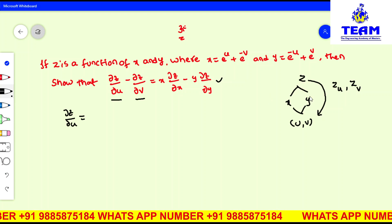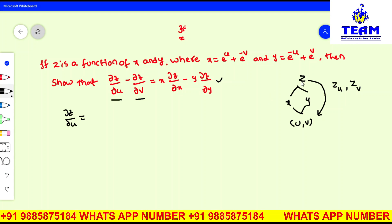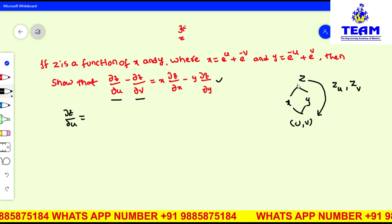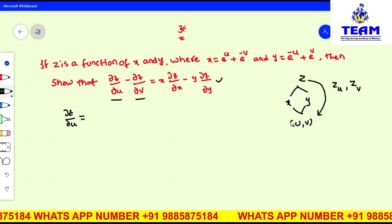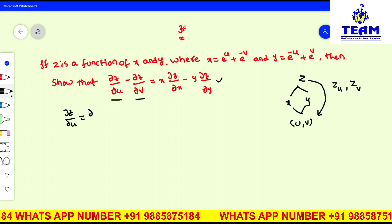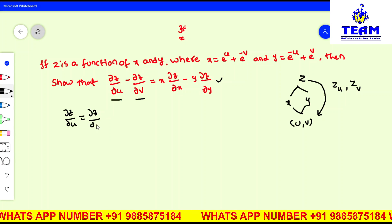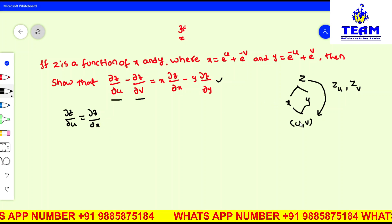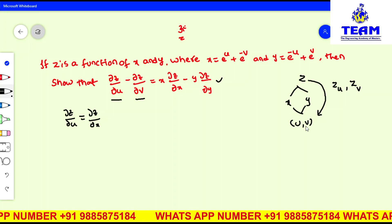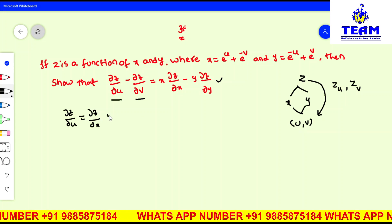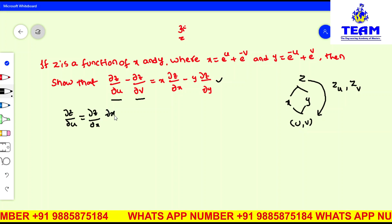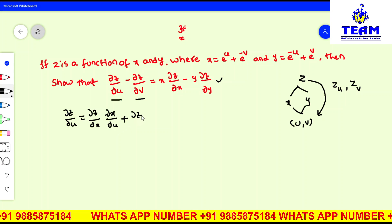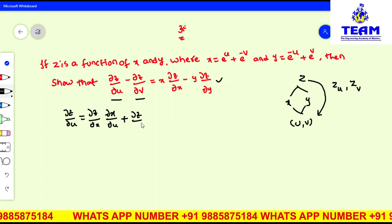Z is having two paths. First, z with respect to x and x with respect to u. Later, z with respect to y and y with respect to u. So: ∂z/∂u = ∂z/∂x times ∂x/∂u, because x also contains two independent variables, plus ∂z/∂y times ∂y/∂u.